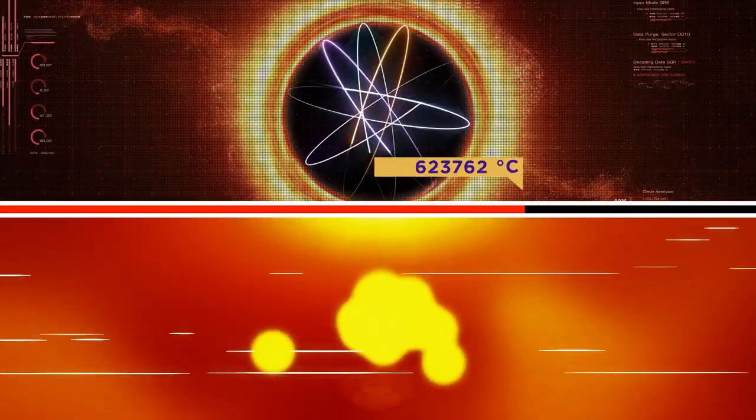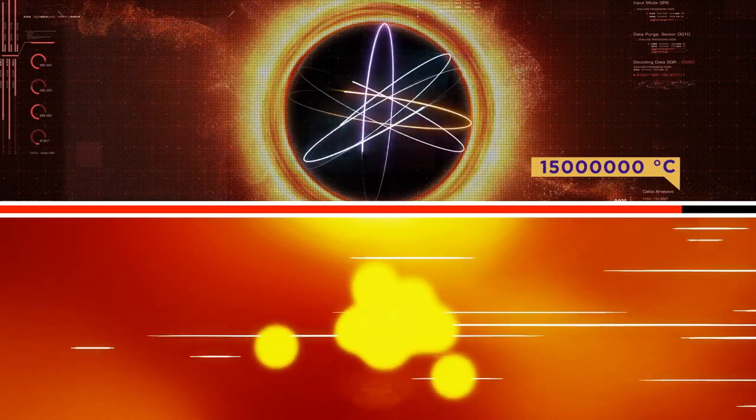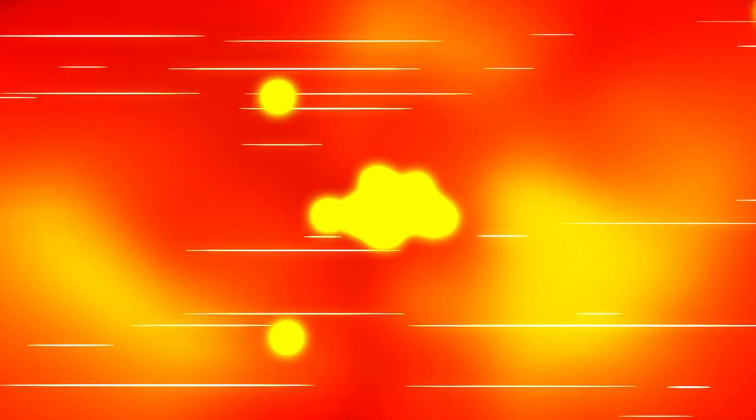In the Sun's core, where temperatures reach 15 million degrees Celsius, atoms collide at very high speeds and fuse. The fusion of light hydrogen atoms produces a heavier element, helium, and very large quantities of energy.